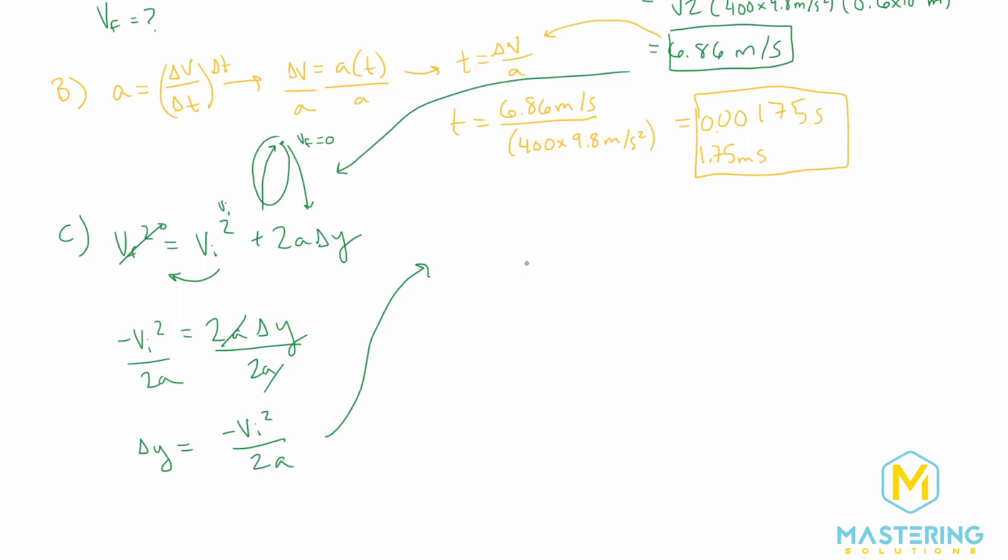So when we plug in our values, we have a negative velocity initial squared, which is 6.86 meters per second. We'll square that. And then we'll divide the whole thing by 2 times the acceleration, which in this case, as it's jumping, the only thing acting on it when it's in the air is gravity. So gravity is pointing down, so it'll be a negative 9.8 meters per second squared.